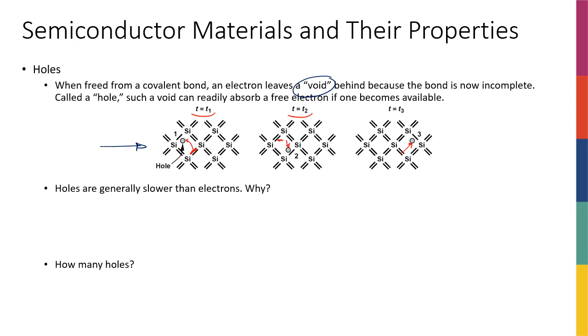In reality, it's the electron moving from right to left. But from a visual perspective, it's easier to see that the hole is moving from left to right.